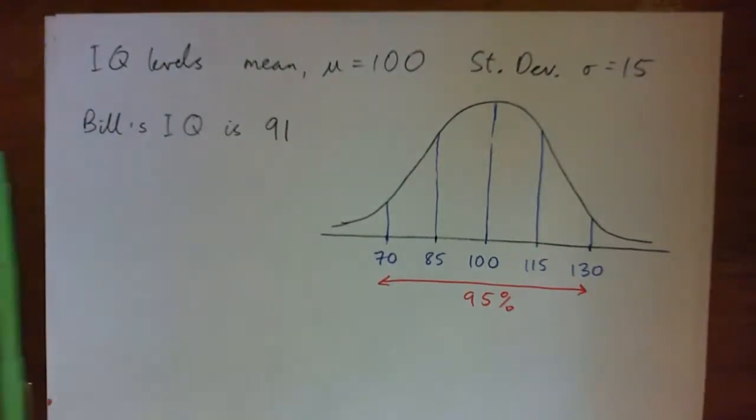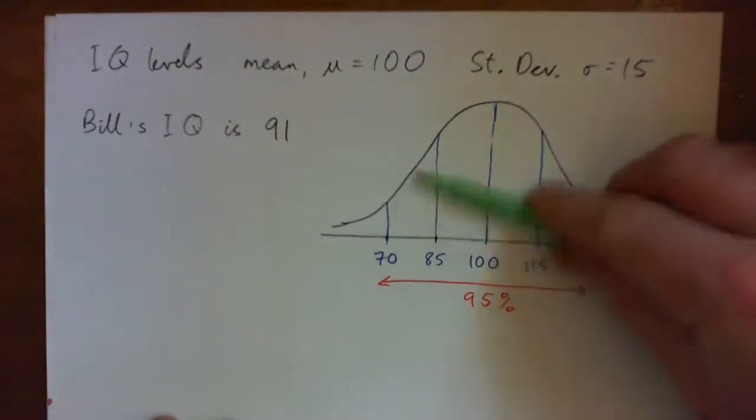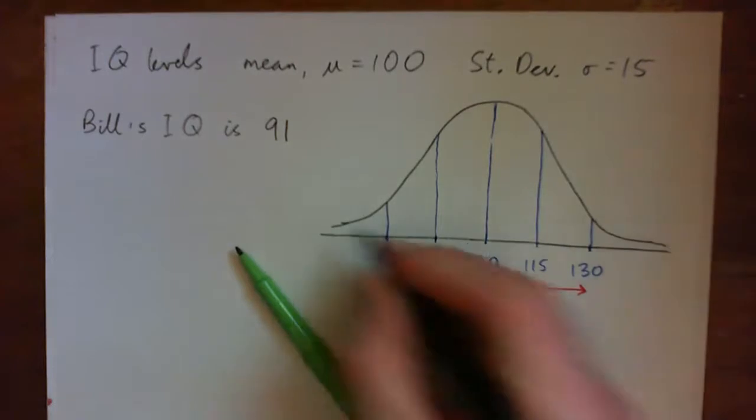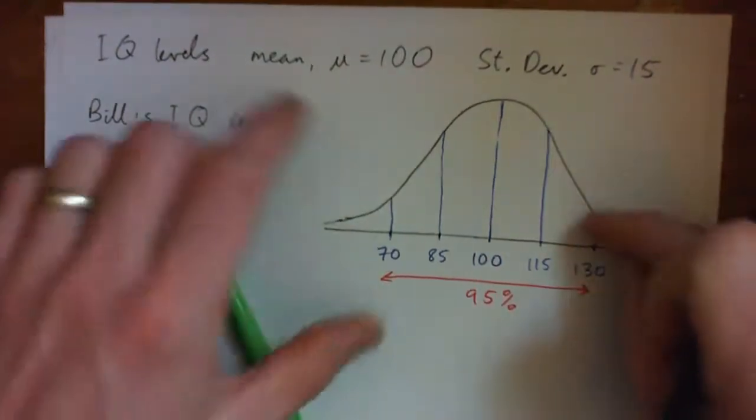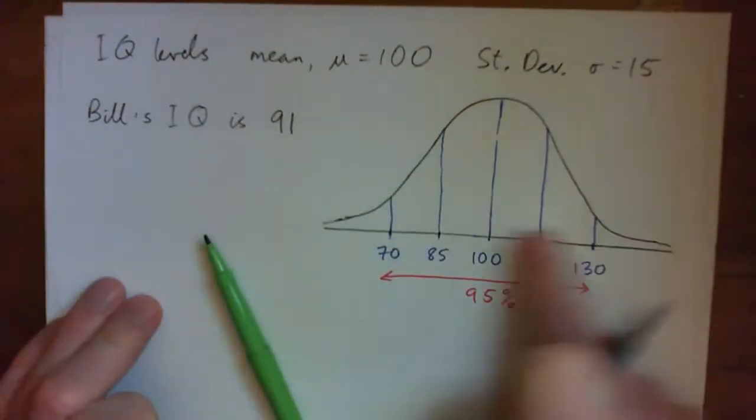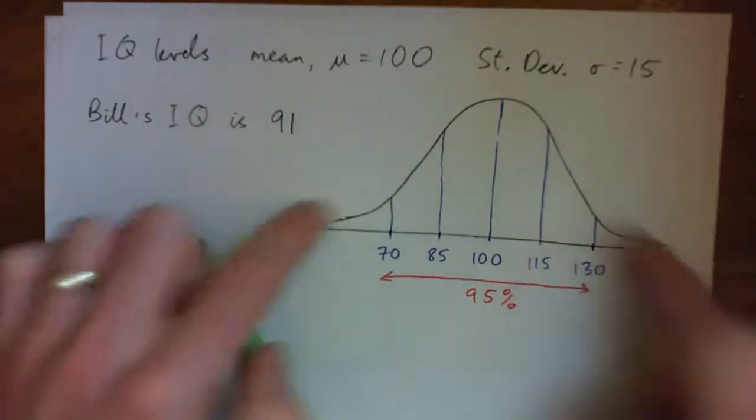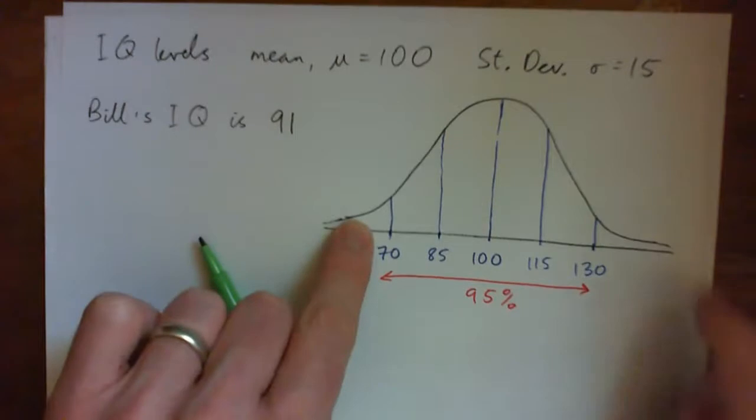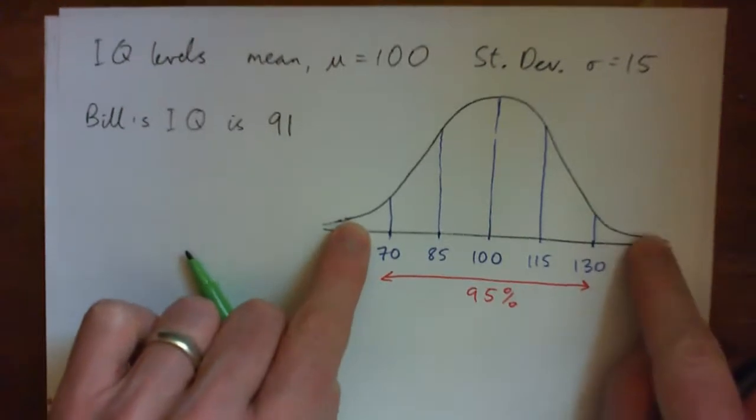So anyway, just to go over it real quick, we're talking about the area under the curve. So if you were to shade in the area between 70 and 130, this area is 95% of the total area of the bell curve. So that means you've got 2.5% out here, and 2.5% out here, right?